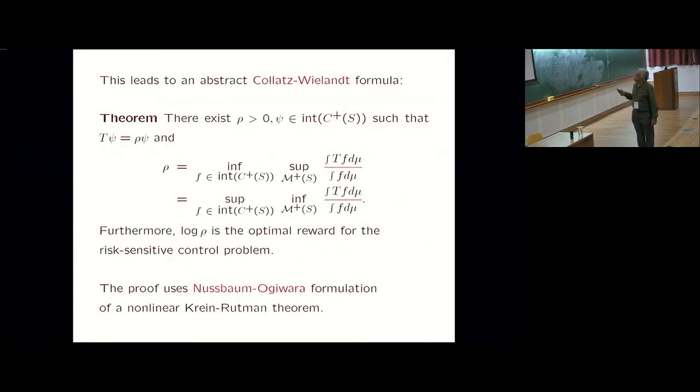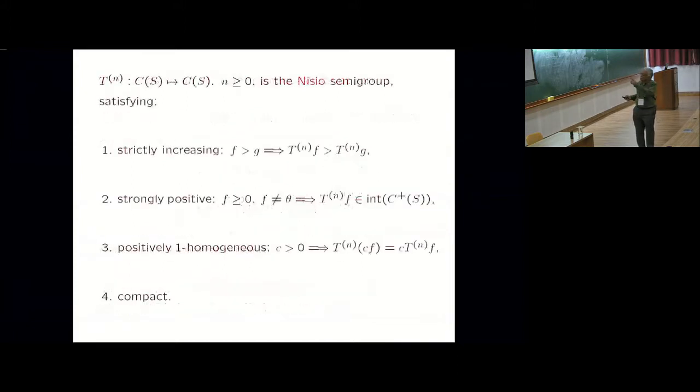Then the first thing we proved was this abstract Collatz-Wielandt formula, which is what you expect. This is the first part was not that hard. Log rho ends up being the optimal reward for the risk sensitive control problem. This was facilitated by the fact that people have worked on non-linear versions of Klein-Rutman theorem. The list I gave of these conditions is precisely what you need to apply that.